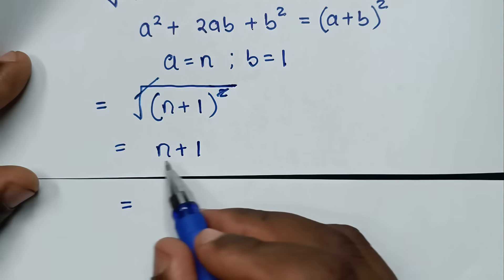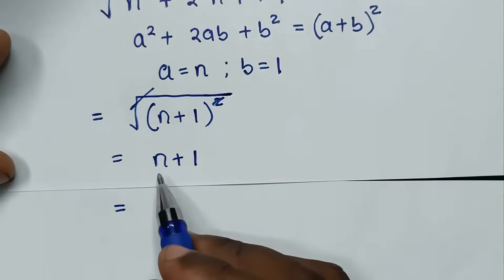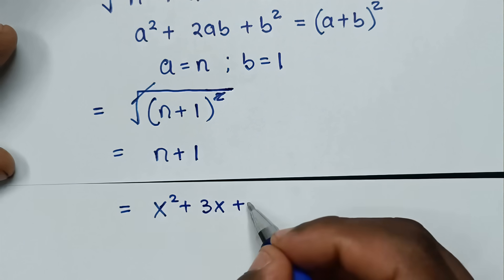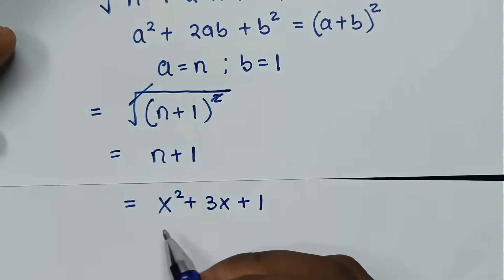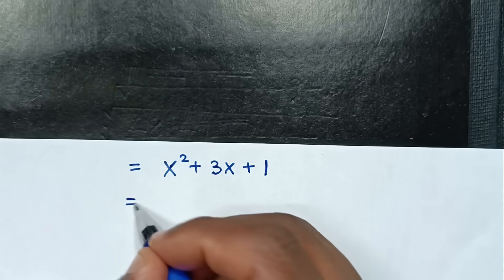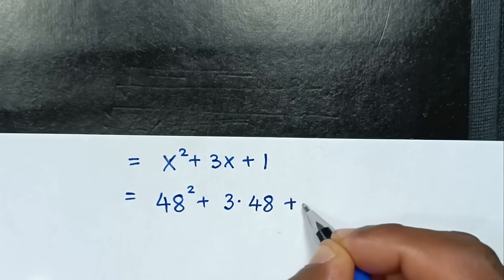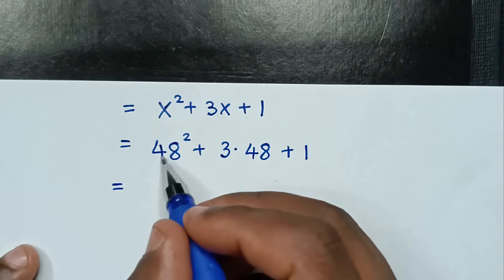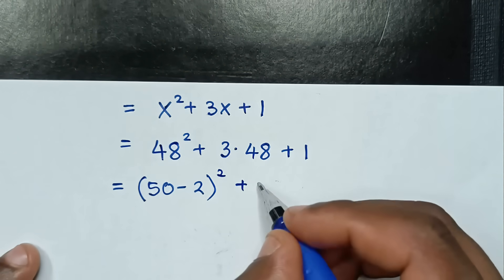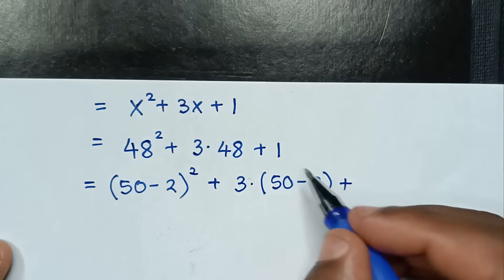From here, n+1. We substitute n, which is x²+3x, plus 1. Then for x we recall that x equals 48. So it will be equal to 48² plus 3 times 48 plus 1. Now 48 is the same as (50-2), so it becomes (50-2)² plus 3 times (50-2) plus 1.